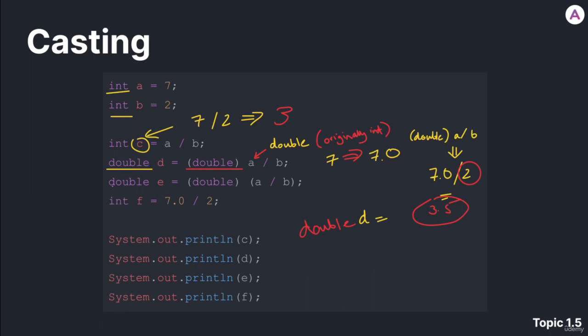Over here, we're doing the same thing. We're declaring a double called e, and we're assigning it the value of this expression right here. Now, this is a bit different, and the difference between d and e is that when we were declaring d, there was no parentheses around this a divided by b operation. What changes when we add these parentheses?